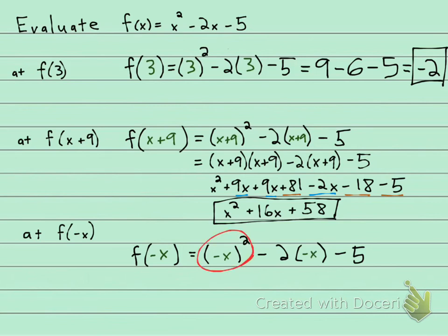This right here, negative x squared, is going to be a positive x squared. Negative x times negative x will give you a positive x squared. Okay, that negative is in the parentheses, it happens more than once. So this is going to be x squared minus 2 times negative x. Minus a negative is going to be a positive 2x, and then minus 5. And that's it.